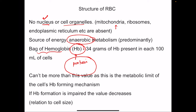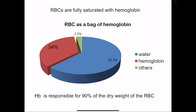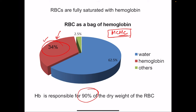Hemoglobin cannot increase beyond its maximum — the amount of volume it occupies in the RBC cannot increase further. If hemoglobin formation is impaired, as in iron deficiency where hemoglobin synthesis is decreased, the size of the cell also decreases, leading to microcytic hypochromic anemia. RBCs are fully saturated with hemoglobin, meaning 34 percent of the volume of the RBC is occupied by hemoglobin, represented as MCHC — mean corpuscular hemoglobin concentration. Weight-wise, hemoglobin accounts for 90 percent of the dry weight of the RBC.